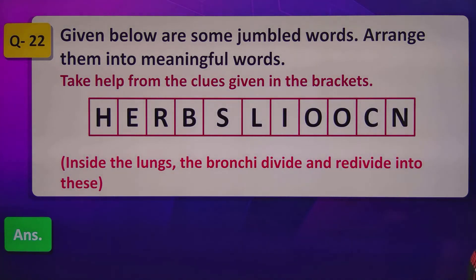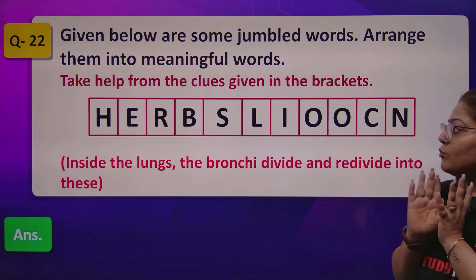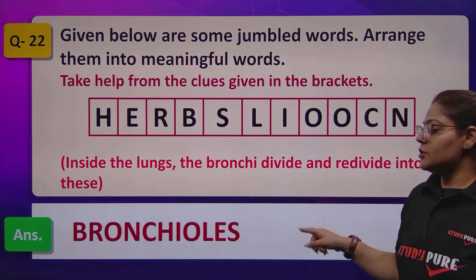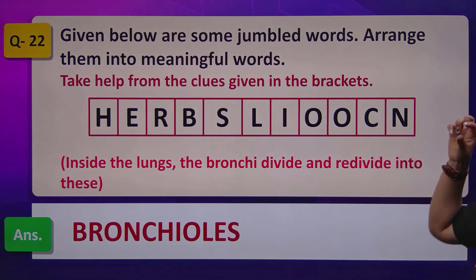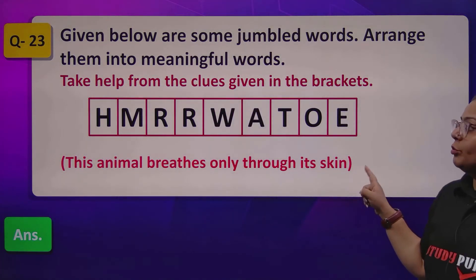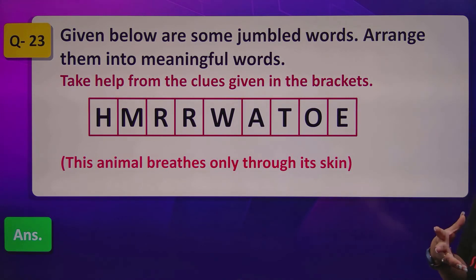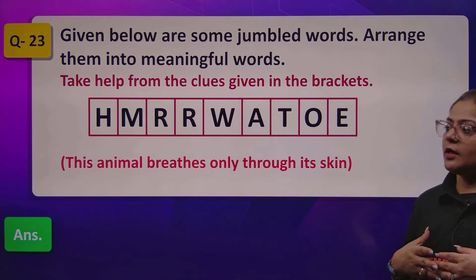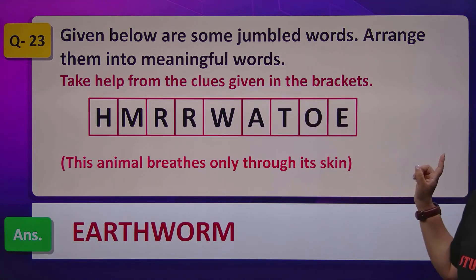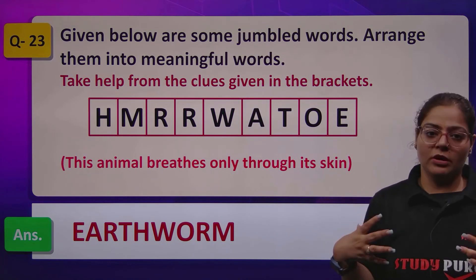Question 22: inside the lungs, the bronchi divide and re-divide into these. Imagine going into the lungs — the bronchi arrives and further divides so that air can reach every portion. The answer is bronchioles. We discussed this earlier — when bronchi divide into bronchioles. Then: this animal breathes only through its skin. Among the many organisms we studied, one uses only skin for breathing — the answer is earthworm. Earthworms use only their moist skin for breathing, which is why their skin always stays moist.